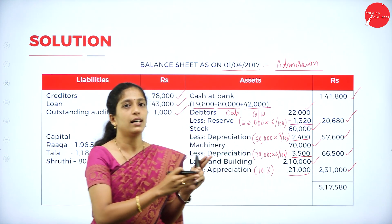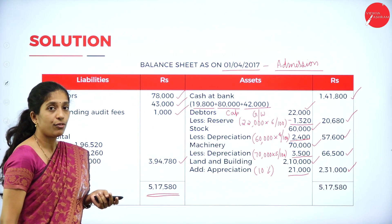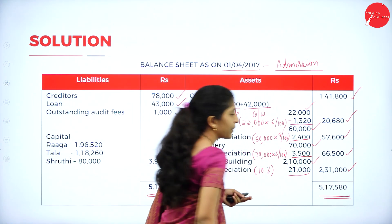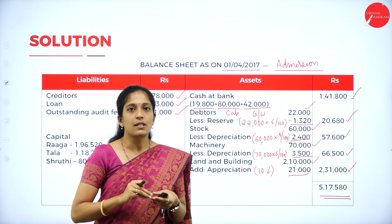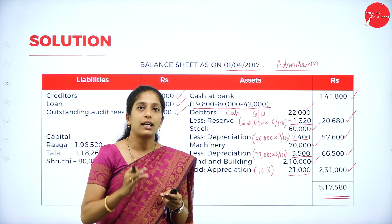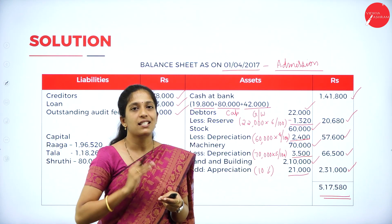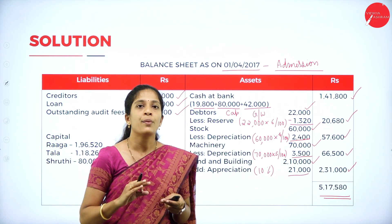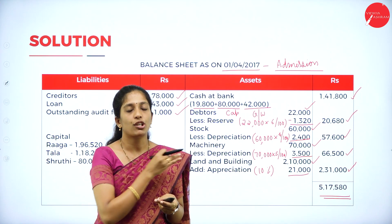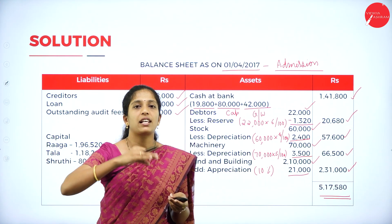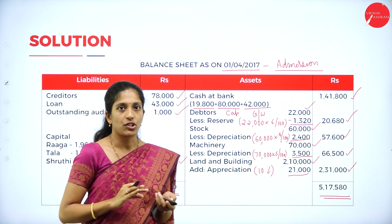This is a 15-mark very important and easy question. You need to prepare: revaluation account (recording increase or decrease in assets and liabilities), partner's capital account (recording all items relating to each partner), bank account, and balance sheet of the new firm (referring to the old balance sheet and adjusting for increases or decreases). This is a compulsory 15-mark question in the exam — make sure you understand it properly.